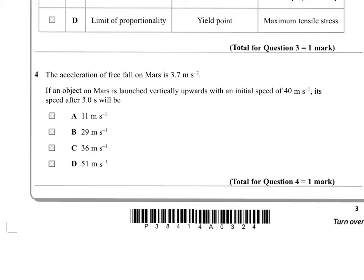Question 4. The acceleration of free fall on Mars is 3.7 meters per second squared. If an object on Mars is launched vertically upwards with an initial speed of 40 meters per second, its speed after 3 seconds will be one of these values. Well, crucially, V equals U plus AT. And if you take the upward velocity that it's projected at to be plus 40, you have to take A to be minus 3.7, and then obviously we're multiplying by the time involved, which is 3. And I make that 28.9 meters per second. So we're talking answer B.